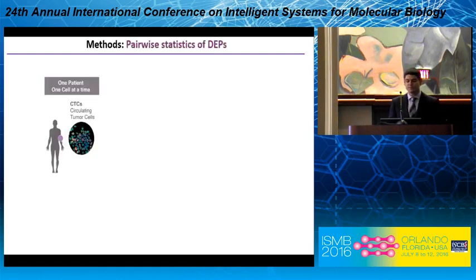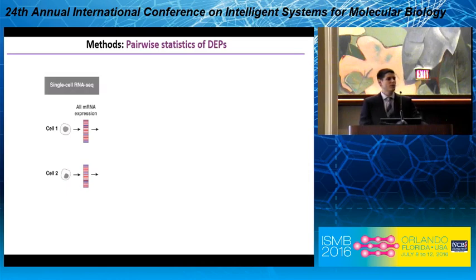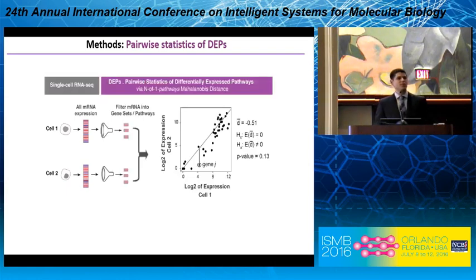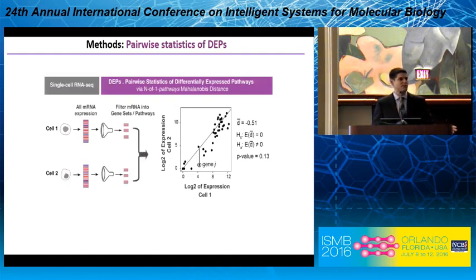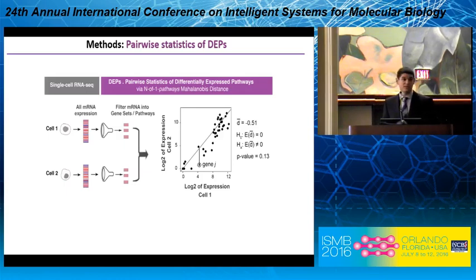First, the construction of DEPs. We have a patient; we are sequencing one cell at a time, and you could apply this to circulating tumor cells. We pair the cells either between patients or within a patient and look at the whole transcriptomes compared for that pair. We use curated knowledge bases to filter down to gene sets of interest — pathways curated to some biological function. From this, we look at the bivariate expression between the two cells, with the x-axis representing log expression for the baseline cell and the y-axis representing the log expression for the reference cell.